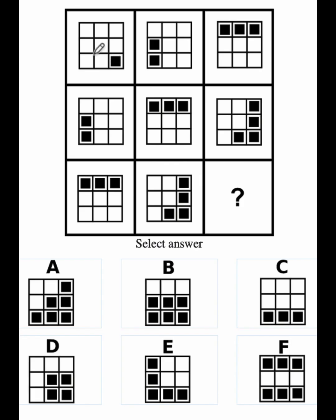We have here three rows and three columns. In the first row, we have a 3x3 square with one shaded square at the lower right-hand corner. Then in the second column of that row, there are now two shaded squares at the lower left-hand column. And in the third column of the first row, all three shaded squares are at the topmost row.